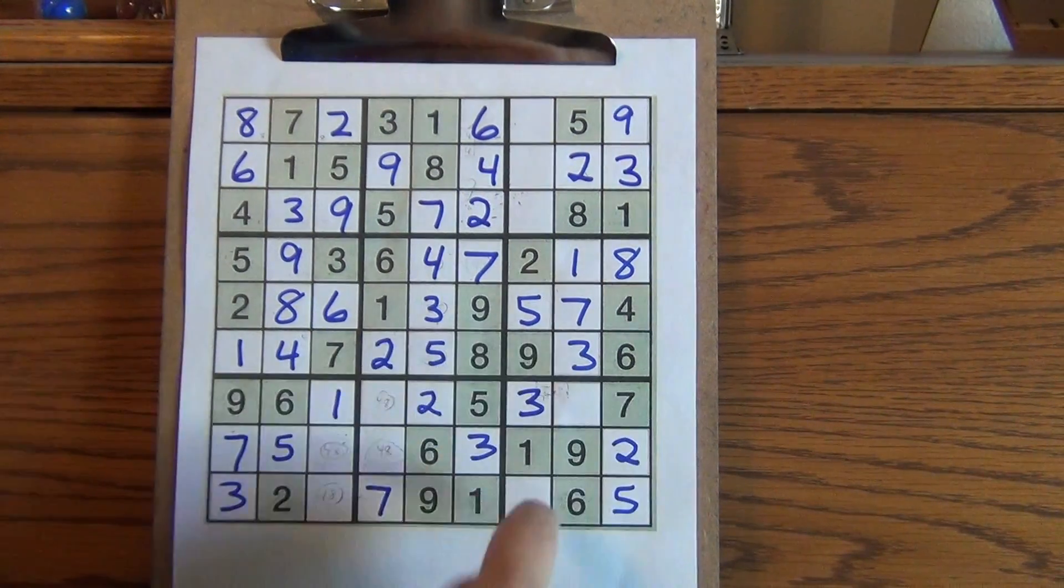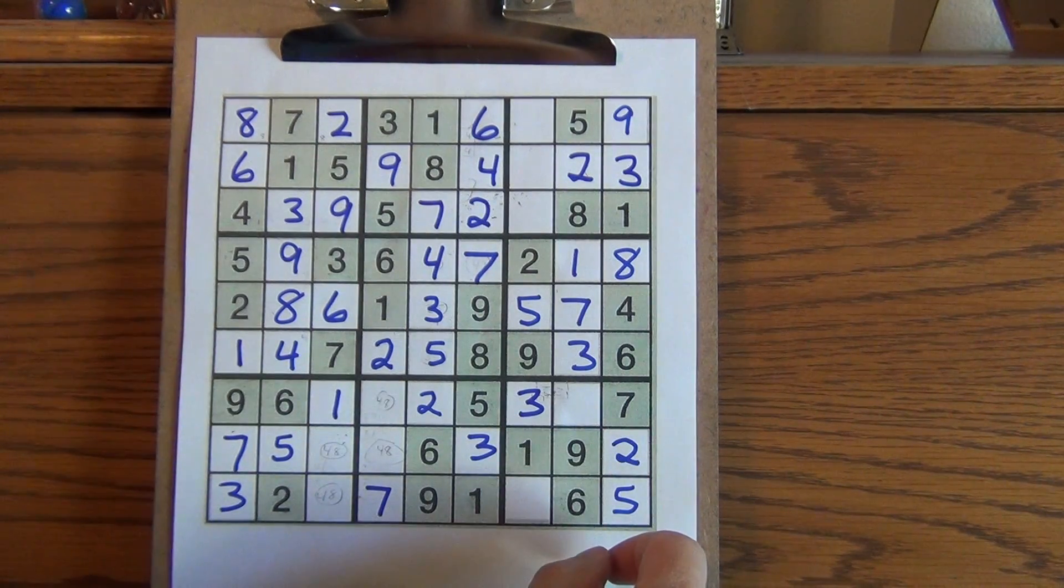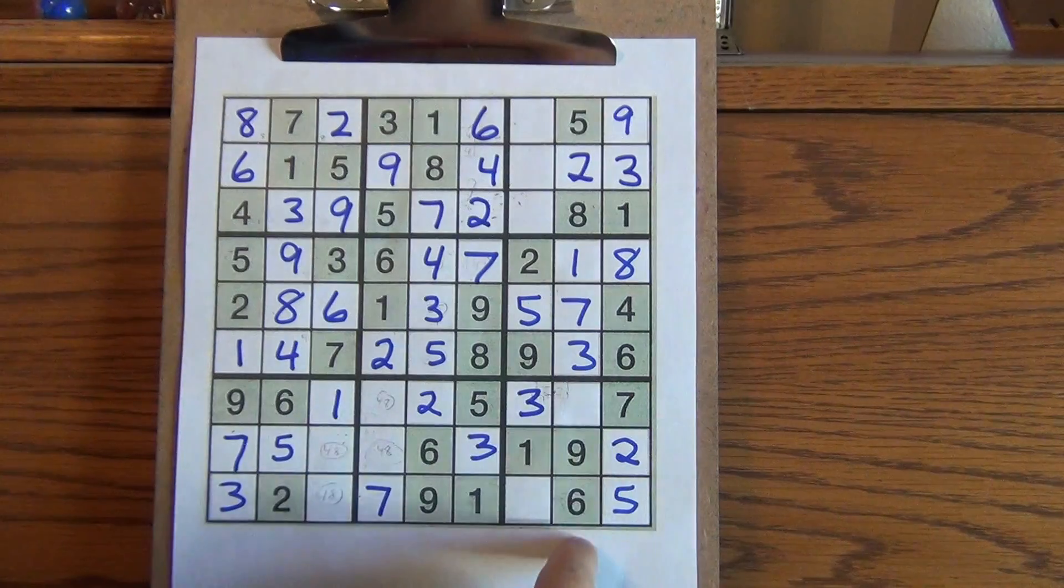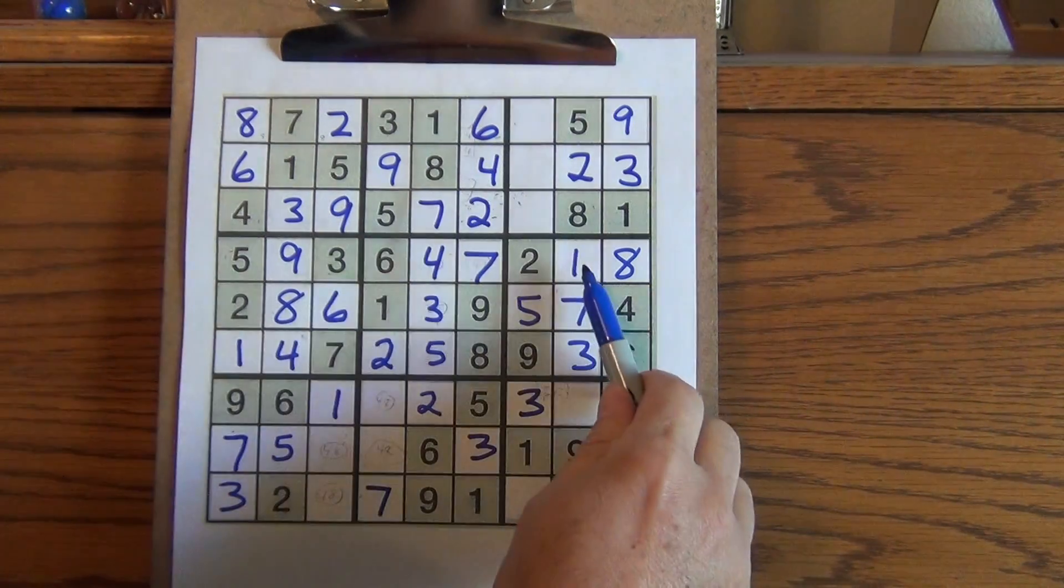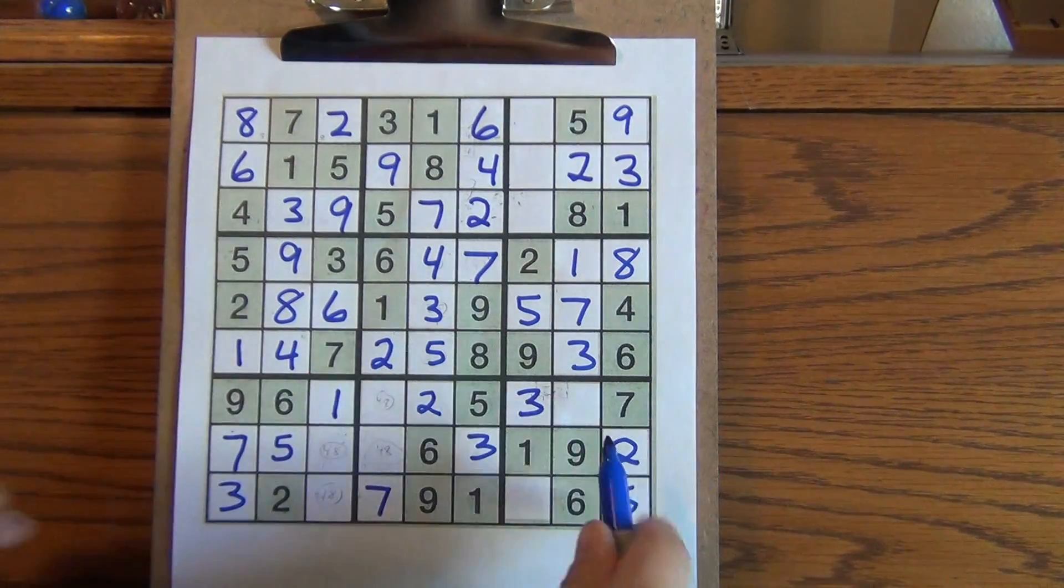For four, four can be here or here. No good yet. Oh, let's see. We can tell right here in the middle where it must be. One, two, three. There is no four, no four. This has to be a four.